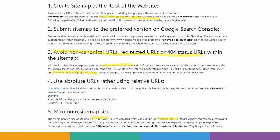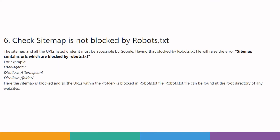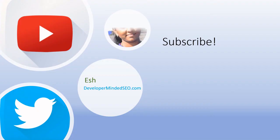Finally, check that the sitemap is not blocked by the robots.txt file. For all websites, you can find the robots.txt file under the root directory by typing your site name followed by /robots.txt. The sitemap should not be blocked there. In this example I have shown a sitemap blocked by the robots.txt file, and a folder whose pages within it are also blocked from crawling. Make sure no sitemap is blocked within the robots.txt file.